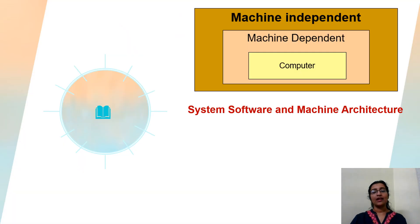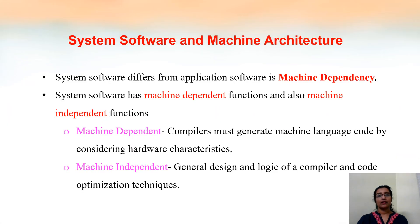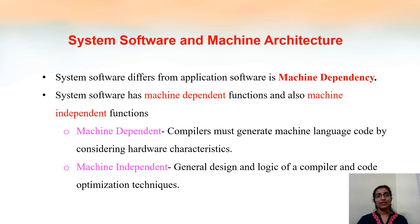We can see how system software is related to the machine architecture. System software is closely related to the system, so it has a direct relation with the system hardware. One of the features which differentiates system software from application software is machine dependency. System software is machine dependent while application software is machine independent, though some features of system software are also machine independent.